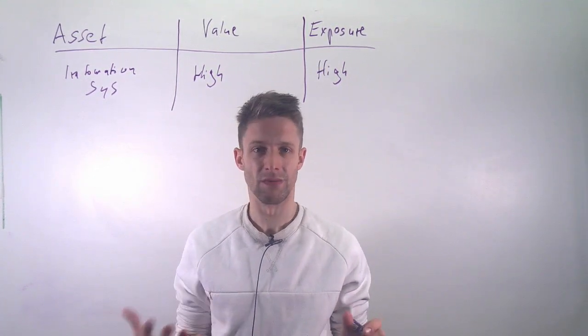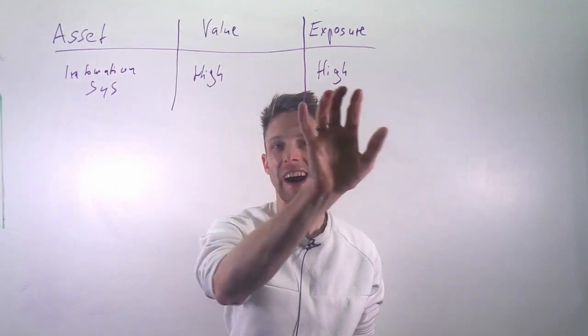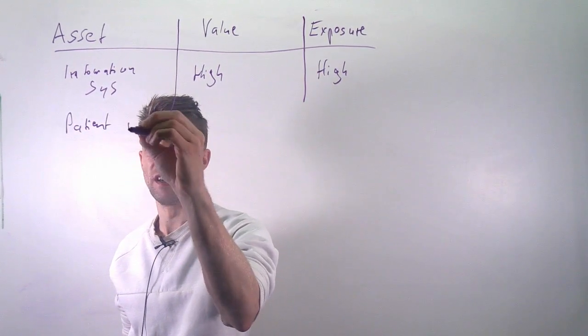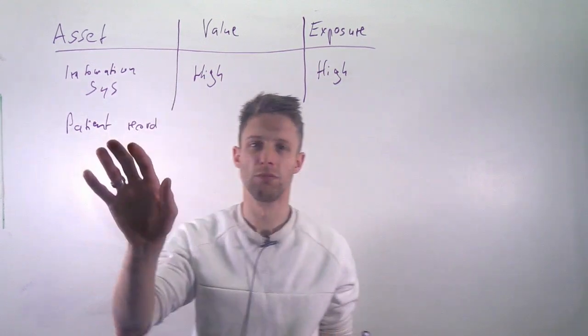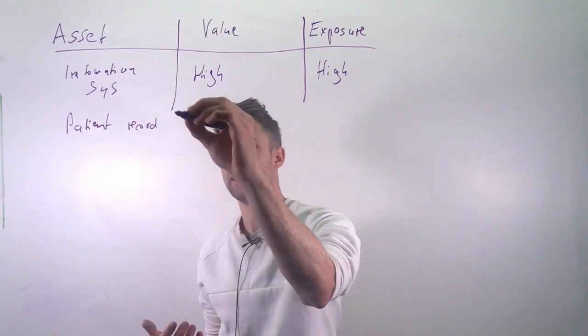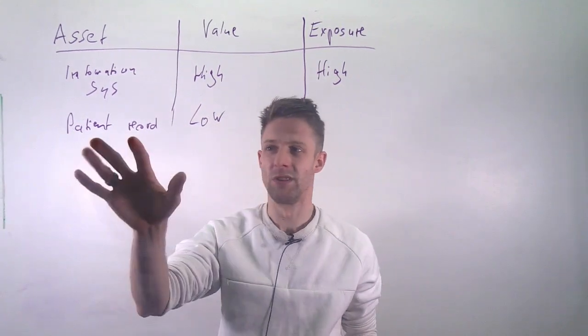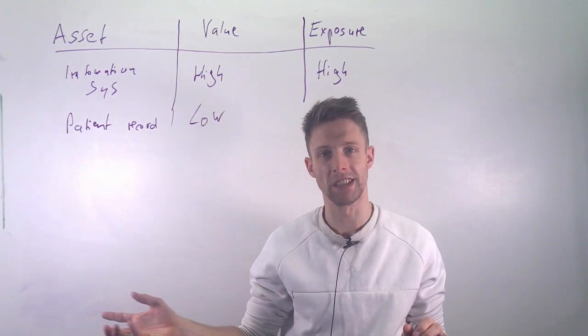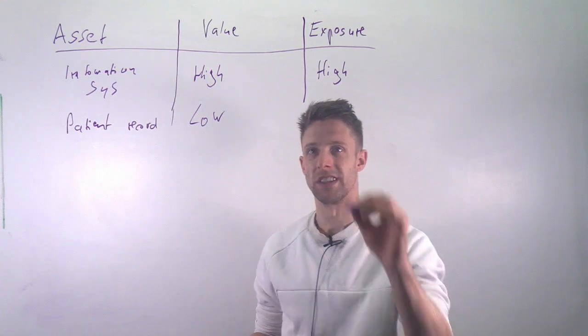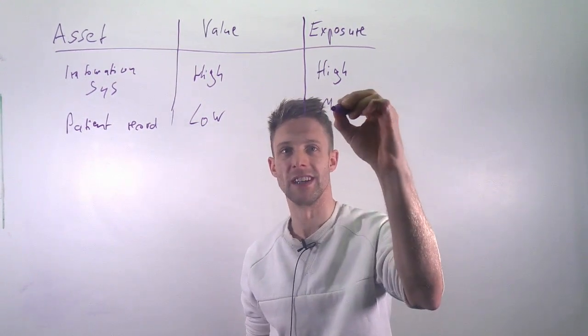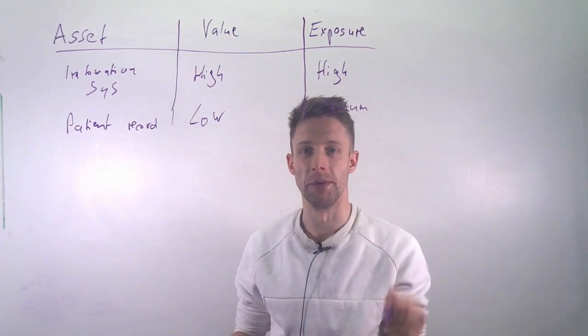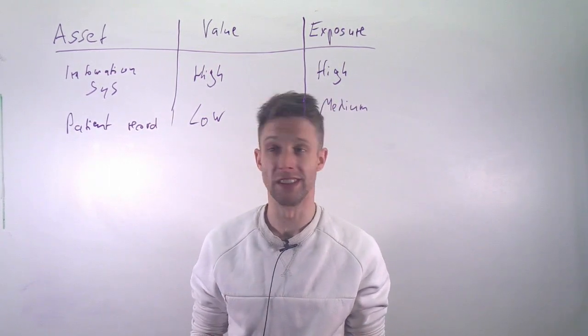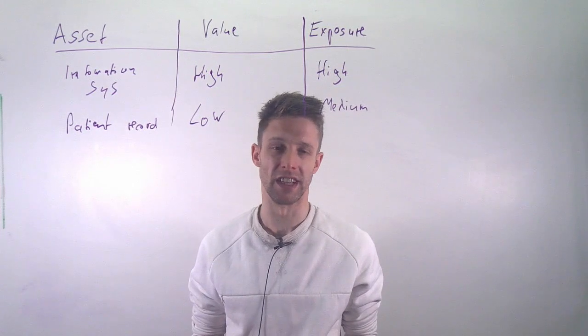So this is obviously a high value and high risk asset that you need to protect, whereas you might, for example, have a single patient record. And it's still not a good thing if it gets exposed, but the value is maybe not as high. You don't need a single patient record to run the entire hospital, for example. Of course, it might be problematic for that one patient, but comparably, that's not the worst thing you have. And similarly, if it gets exposed, the book says low. I would actually say medium. It doesn't threaten your operation, but at least you might lose reputation. You might get into lawsuits because sensitive data gets exposed.